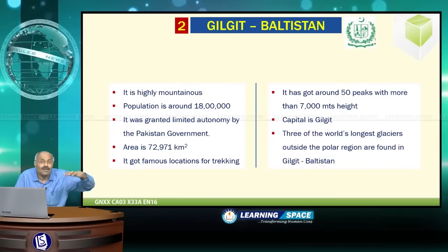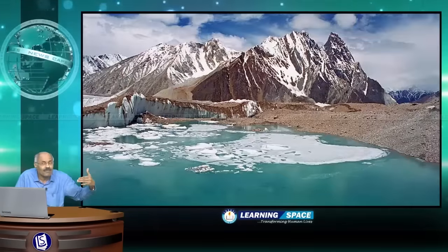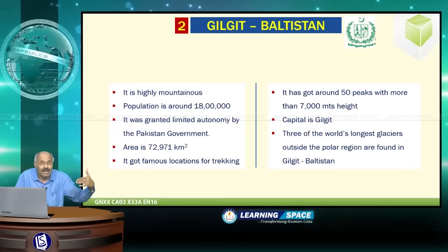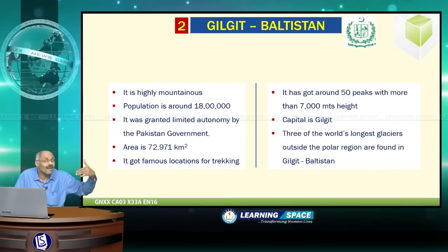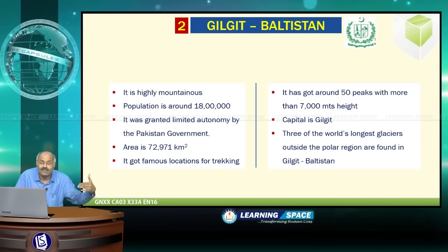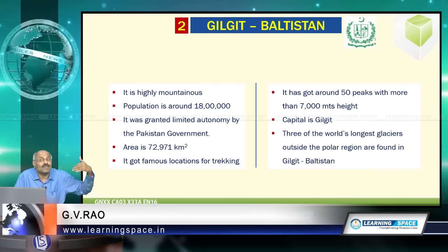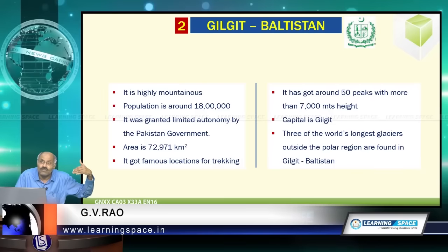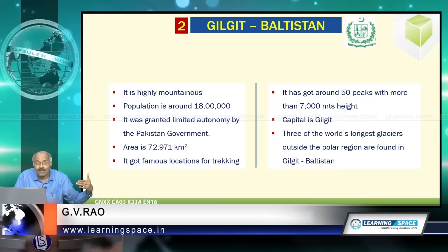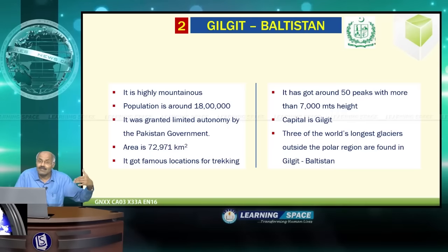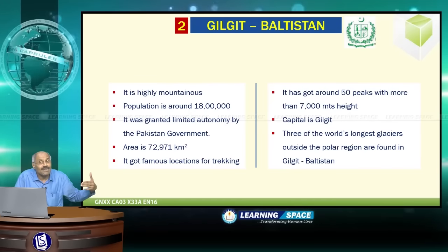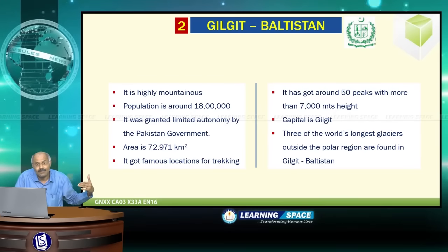Let us look at Gilgit-Baltistan. It is a highly mountainous area, with a population of around 1.8 million. It was granted limited autonomy by the Pakistani government. The area is around 72,000 square kilometers, with famous locations for trekking and almost 50 peaks of more than 7,000 meters height.